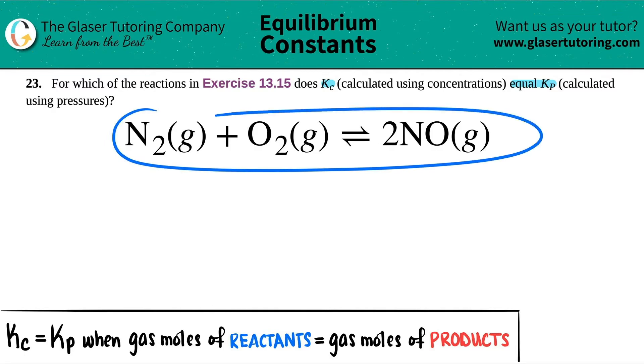So in this case I got a balanced equation, right? We have to find out if the N2 gas plus the O2 gas, which comes to equilibrium with 2NO gas, does Kc equal Kp? And maybe I'll just put a question mark here. Does it? Yes or no?